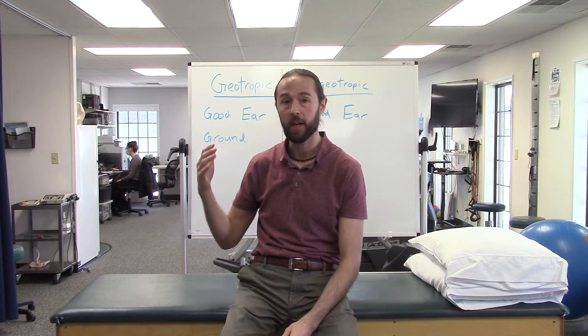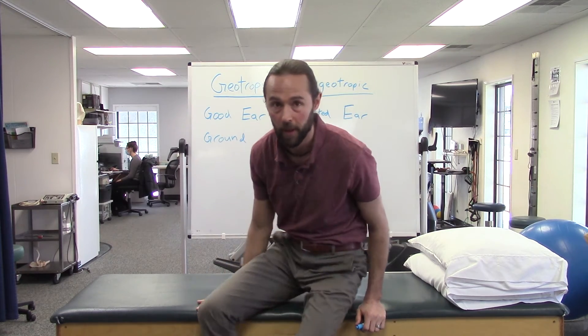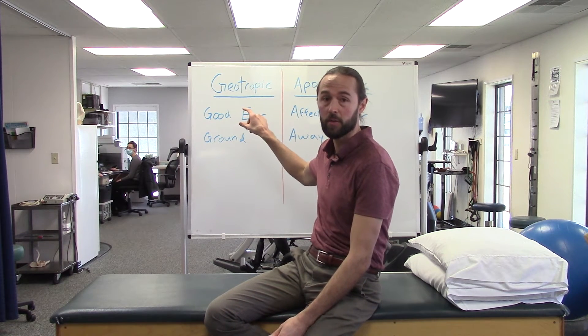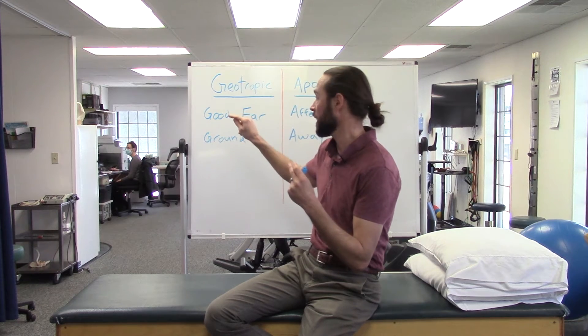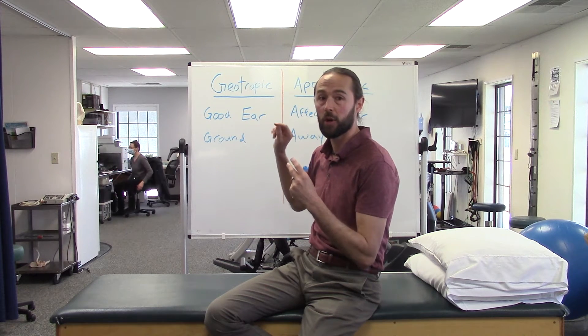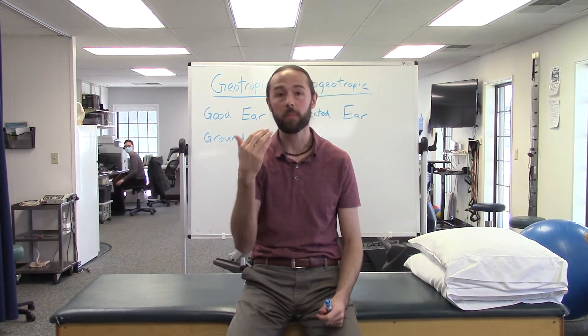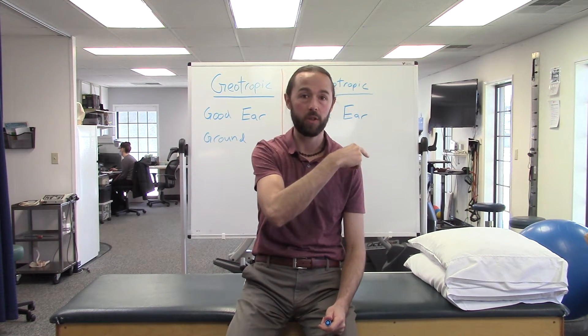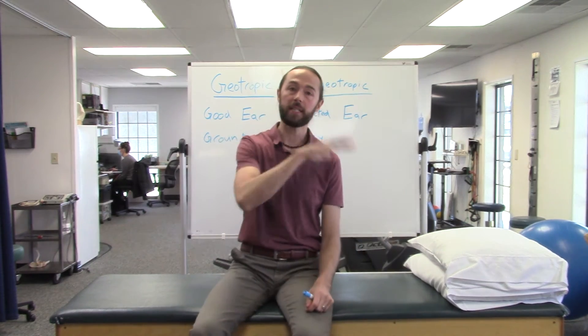With the Gifani maneuver, let's start with the geotropic variant. If you have geotropic nystagmus and you've figured out which side has the problem, the Gifani is a two-step process. You're going to go to your good ear and then look at the ground. Let's say I've figured out that I have geotropic nystagmus on my right inner ear — I'm going to go to my good side for the Gifani, which means I go to my left, and then look at the ground.